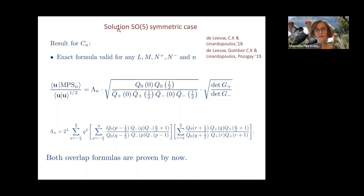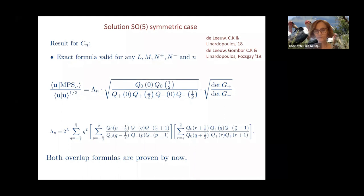The same holds for the integrable SO(5)-symmetric case: there is an exact formula valid for all parameter values, expressed in terms of Baxter polynomials and the Gaudin matrix, though with somewhat more complicated sums over Baxter polynomials. These formulas were found in small steps but both full overlap formulas are now completely proven.